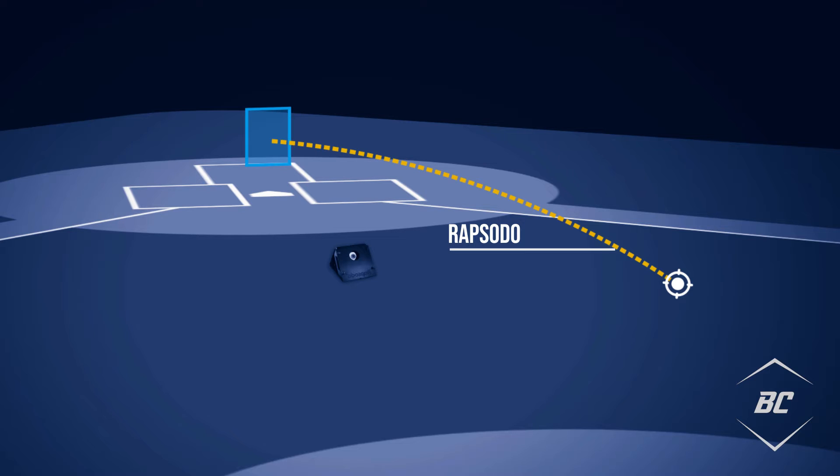Other tracking technologies like TrackMan use the inverse method of Rapsodo and directly capture the entire flight of the ball to measure movement. This is important to remember when comparing data from different technologies, as Rapsodo's movement data points may be less precise.